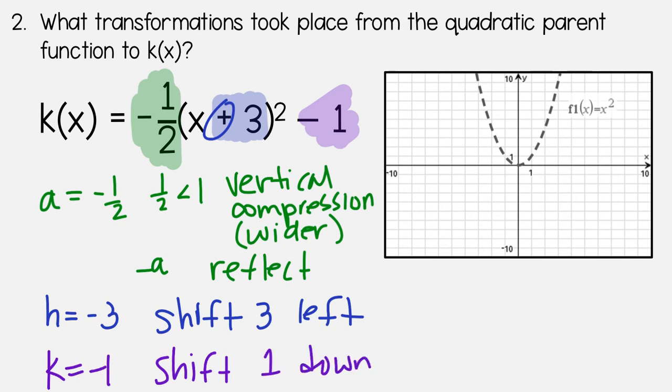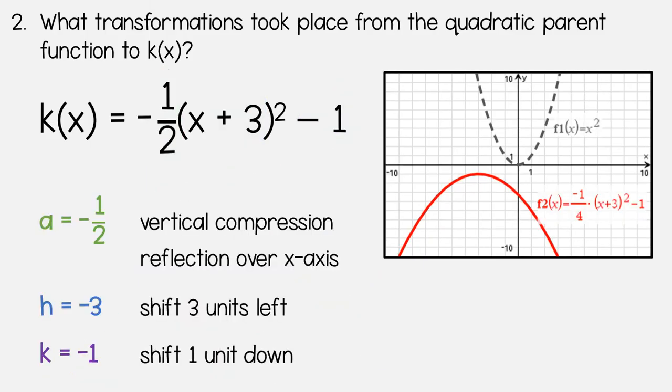So if I needed to draw this, starting at the vertex, we're shifting 3 to the left. 1, 2, 3, and 1 down. So that is where our new vertex would be. Now we have to make sure that we reflect, which means that it's going to open downwards. And that it's wider than normal. So something kind of like that. So let's check our answer. And there it is.